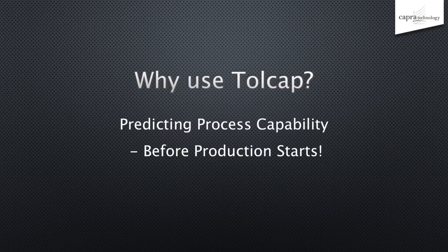What Tollcap enables you to do is to predict the manufacturing process capability of the parts you design. Will the dimensions of the part be within tolerance, or will there be an unacceptable number of parts out of tolerance? Out of tolerance parts are a big problem, adding significant costs that eat away at the profitability of your product and swallowing scarce engineering resources as you struggle to put things right rather than getting on with the next project.